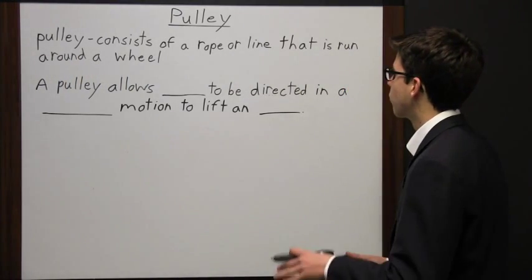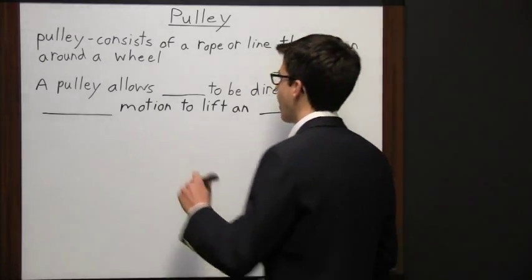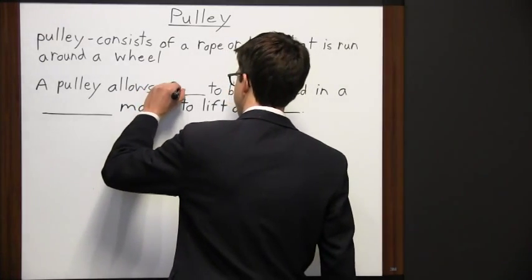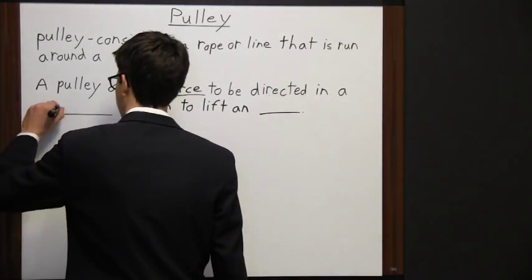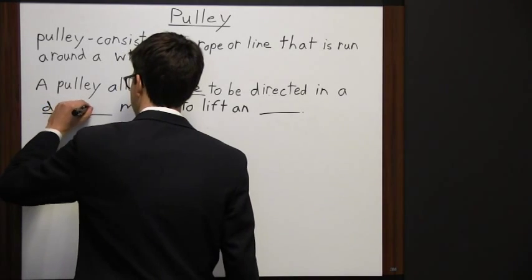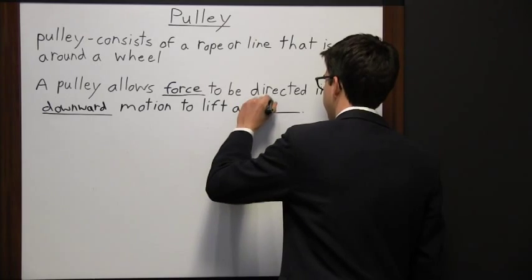A pulley consists of a rope or line that is run around a wheel. A pulley allows force to be directed in a downward motion to lift an object.